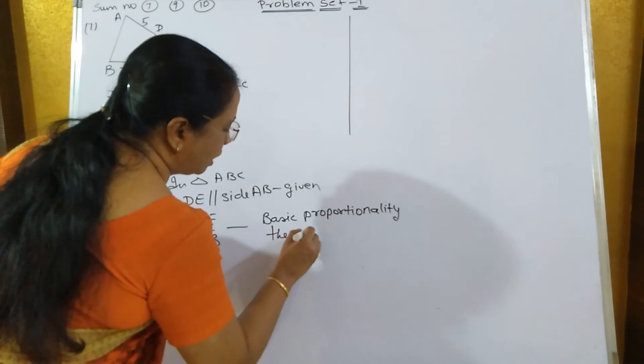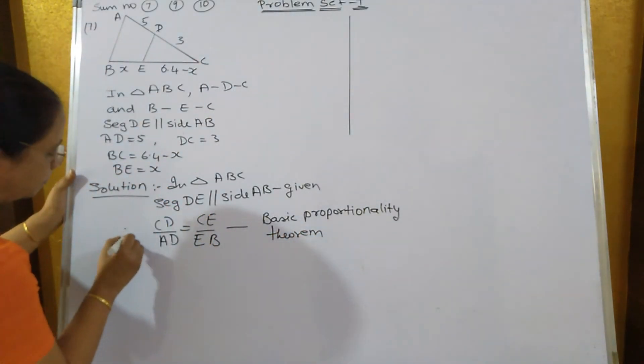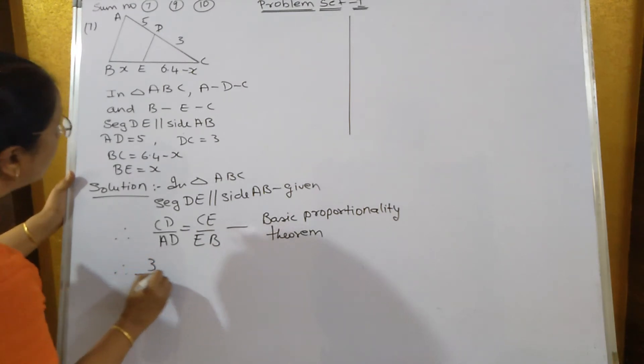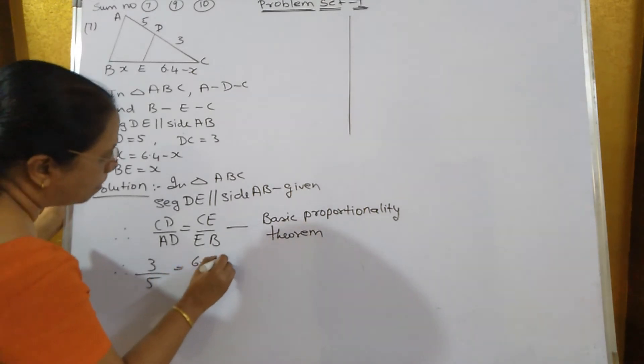Put the values. What you will get? What is CD? CD is equal to 3 upon 5 is equal to 6.4 minus X upon X.